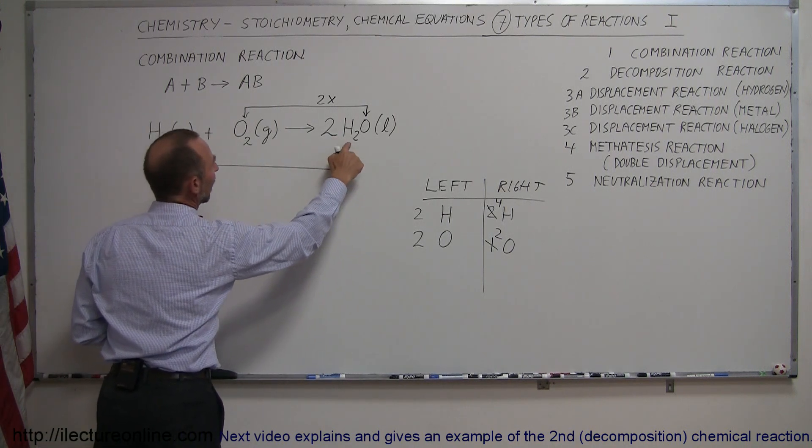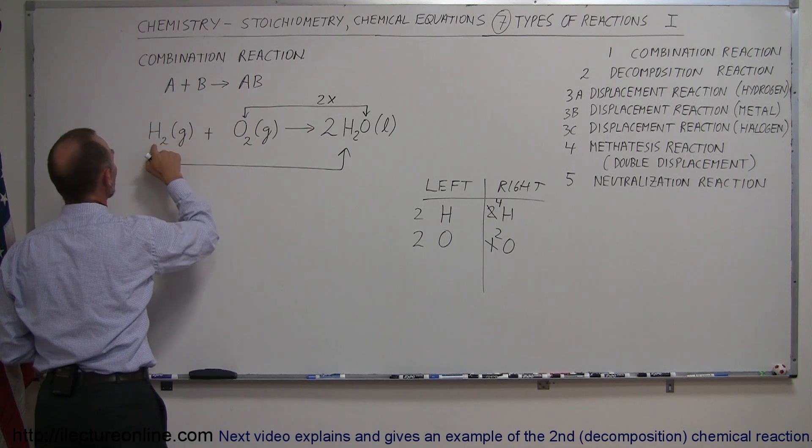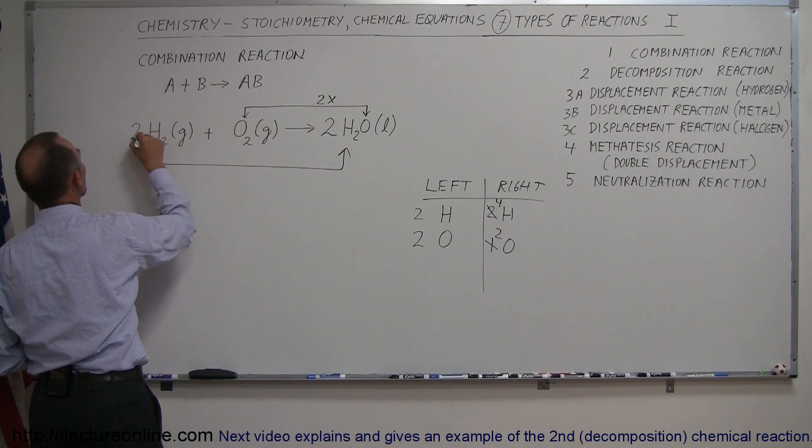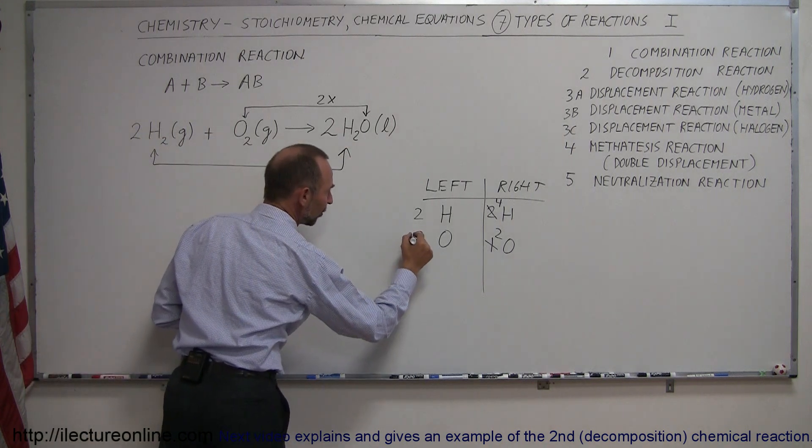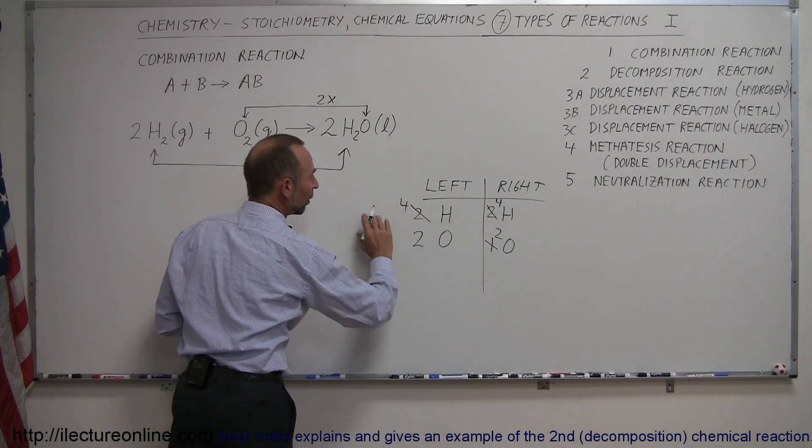Notice, I have four hydrogens here, I have two hydrogens here. So, if I double these, make that into two times two or four. Now, the hydrogens are balanced. So, I can change this, and that now changes to a four.